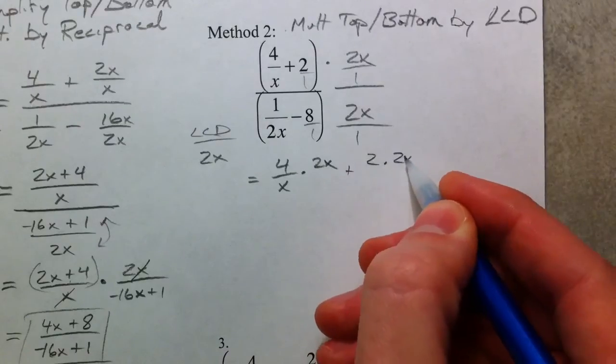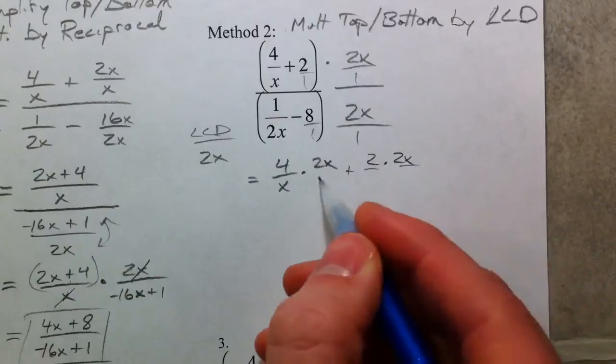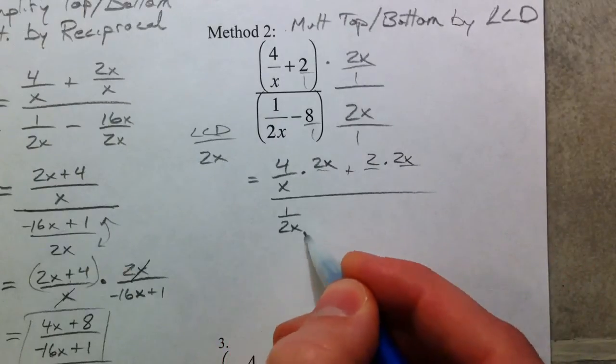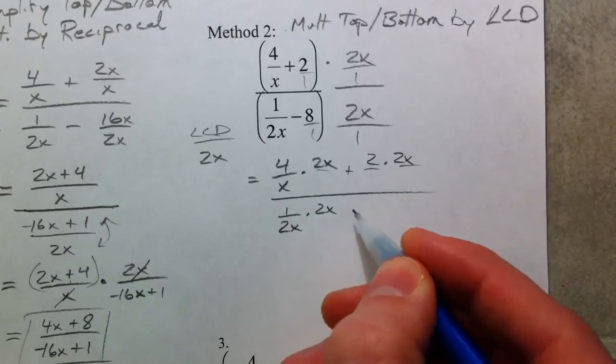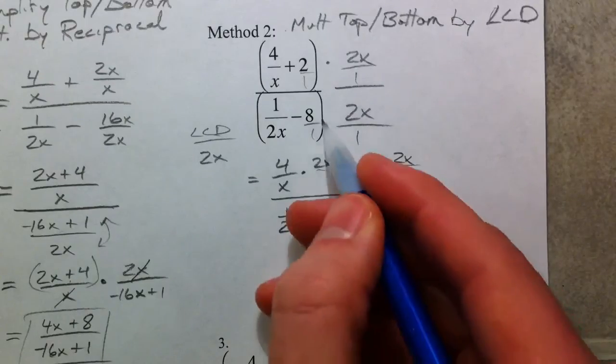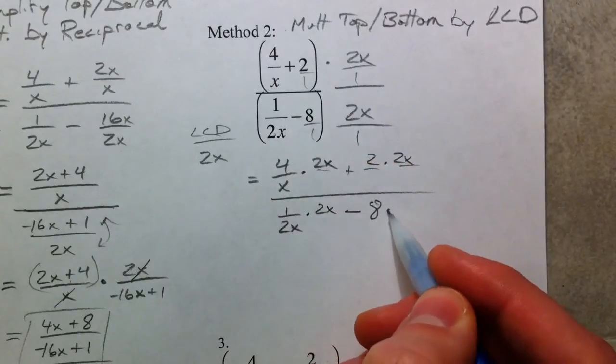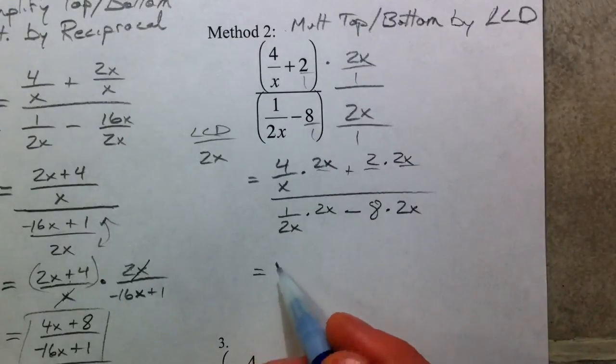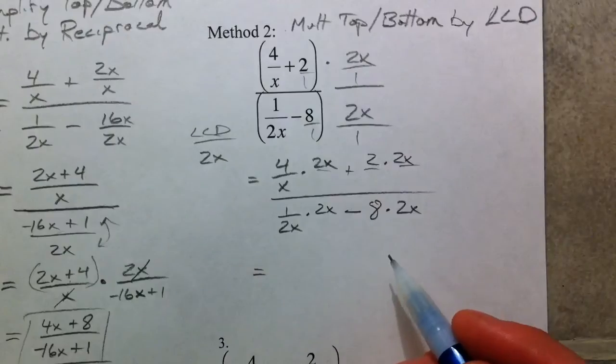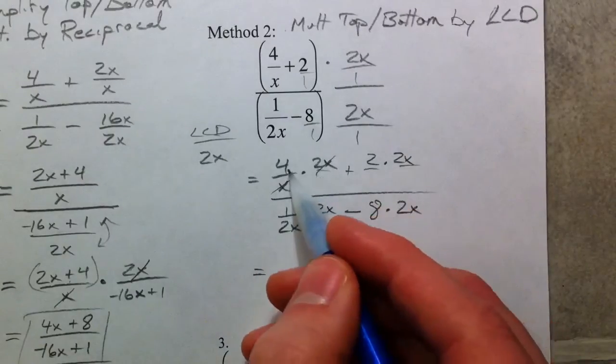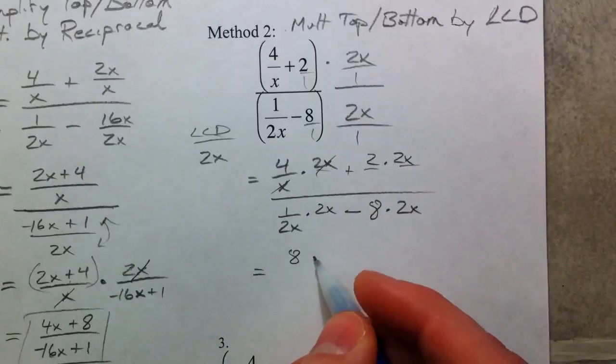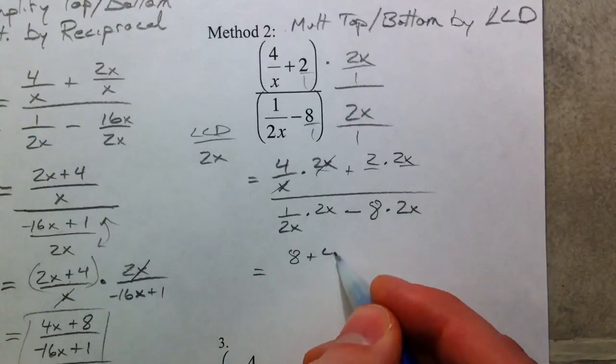So we're going to get 4 over x times 2x plus 2 times 2x, all divided by 1 over 2x times 2x minus our 8 times our 2x times our 2x. So what happens is all of the denominators cross out because we set it up to do that. The x and the x cross out, and 4 times 2 is 8.